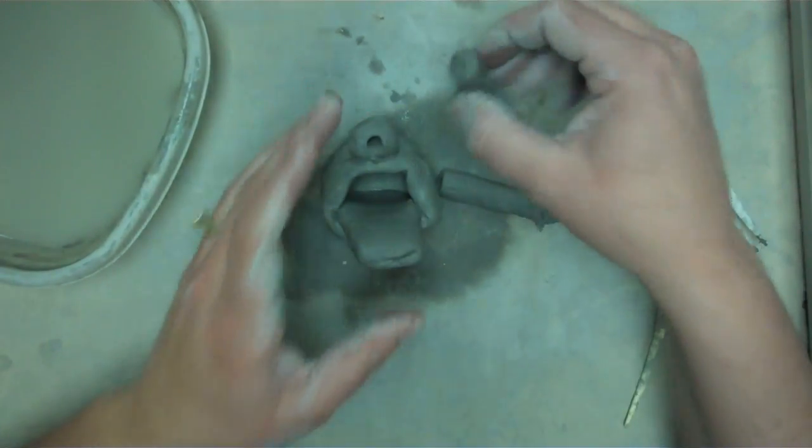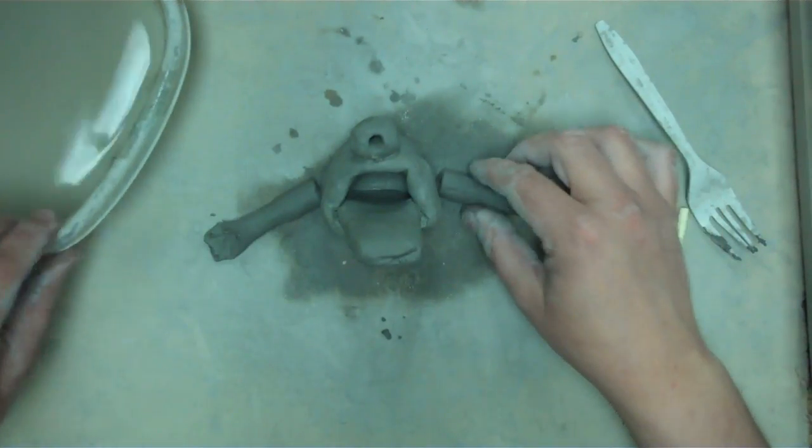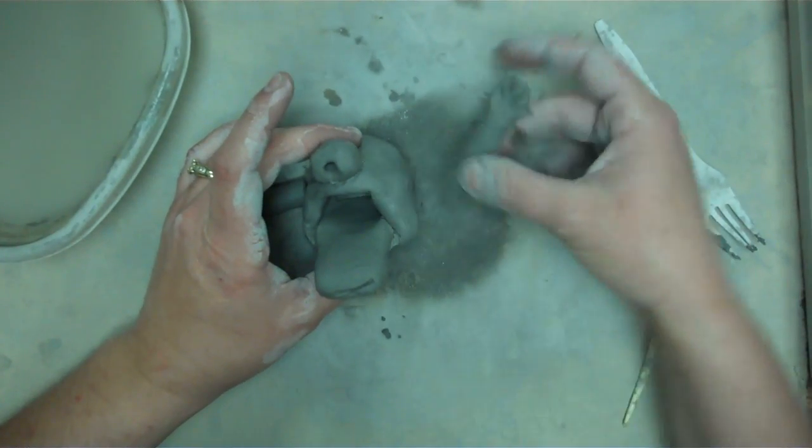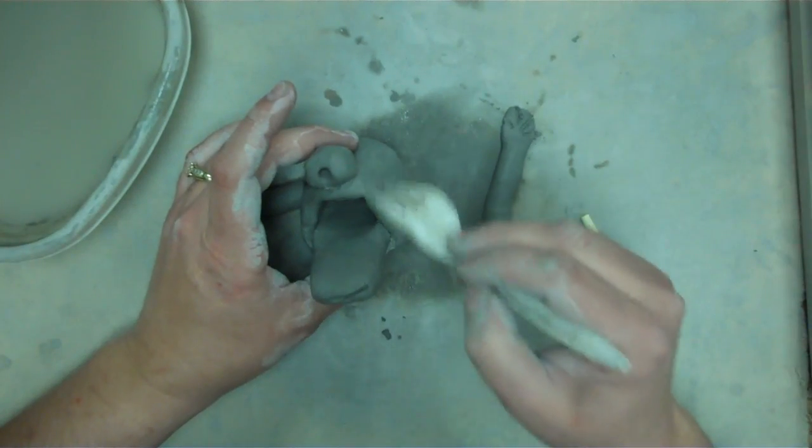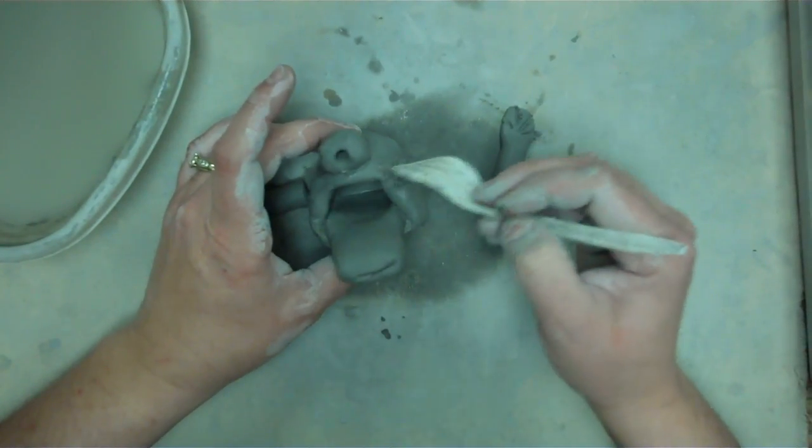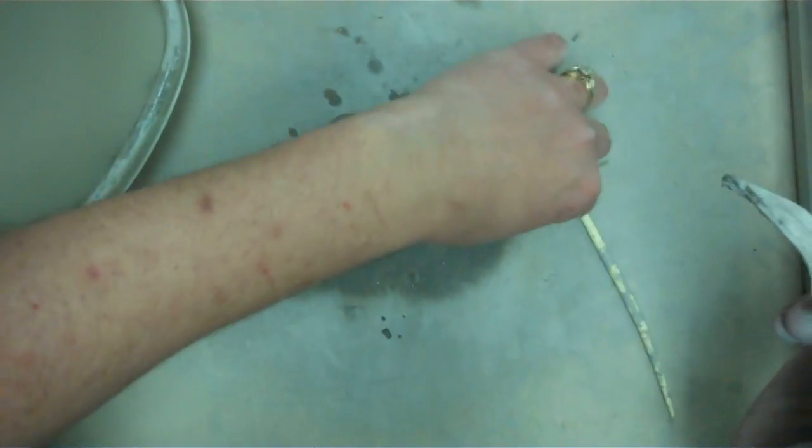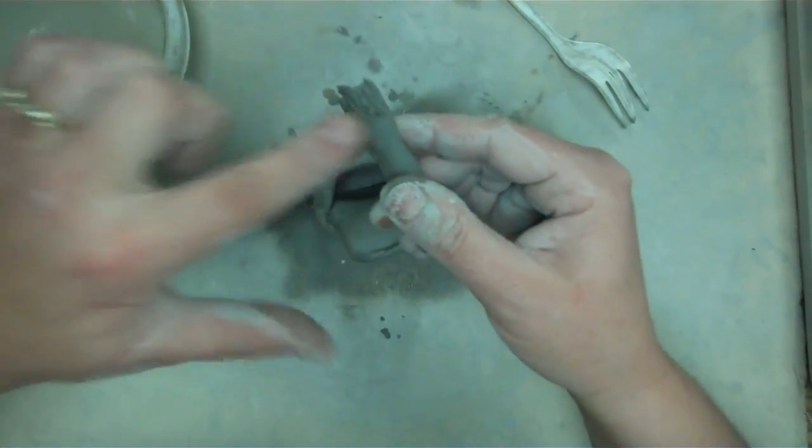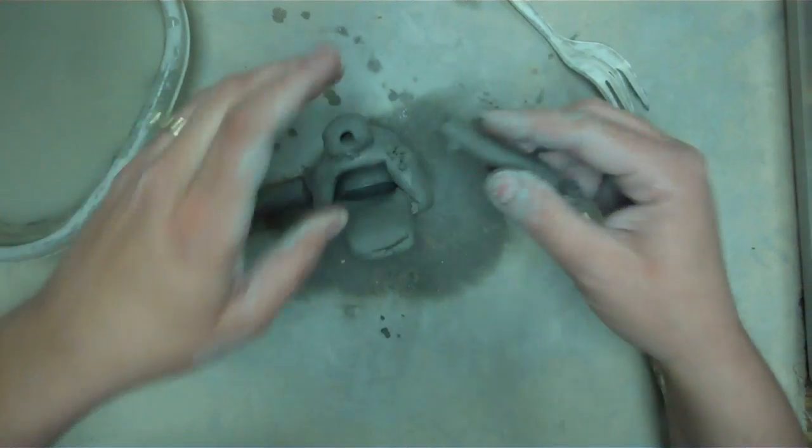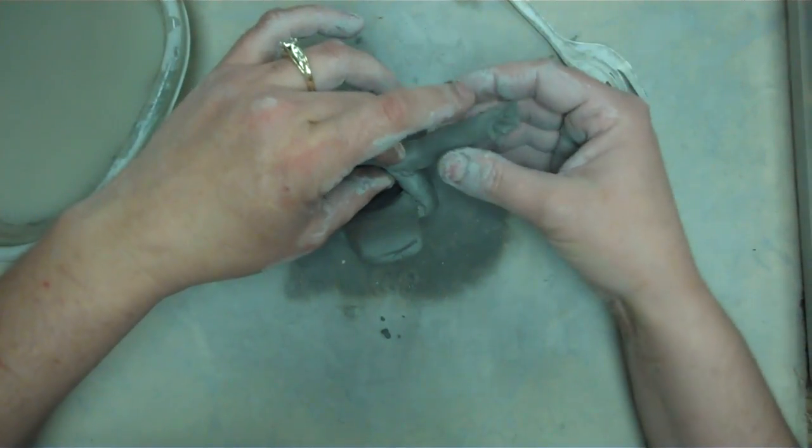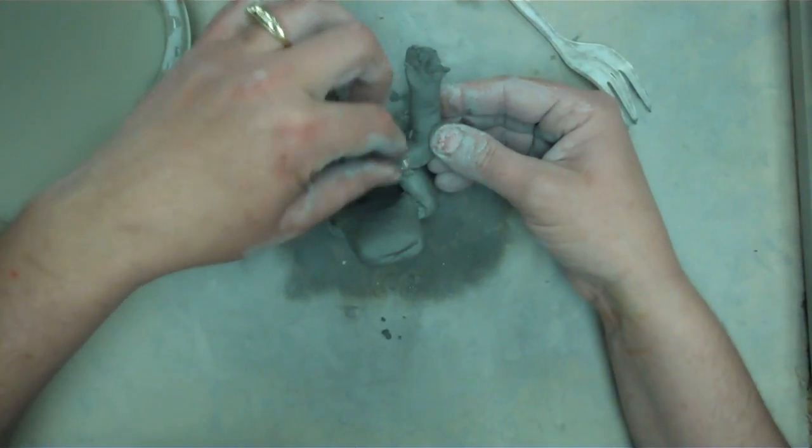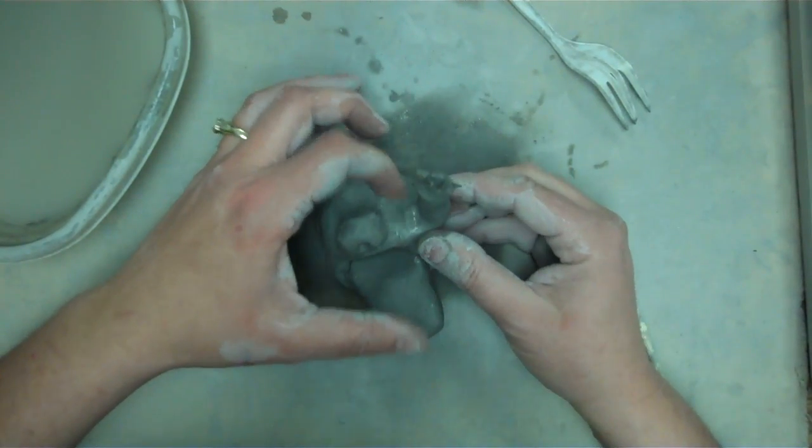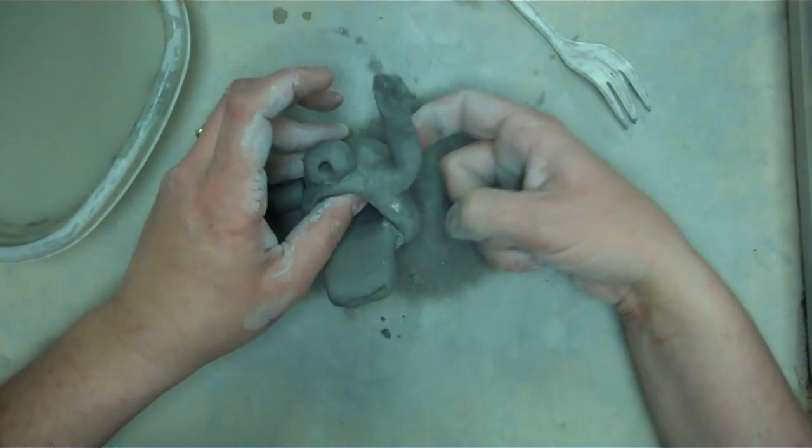Now, I'm going to attach the arms to my monster. So again, if the arm's going to go right here, then I need to make the scratch lines with the fork. And then on the end of the arm, add some slip, and then attach it. I'm going to have him waving, so I'm going to bend his arm up. Now smooth that clay from the arm onto the body of the monster so that it really blends in and sticks together.